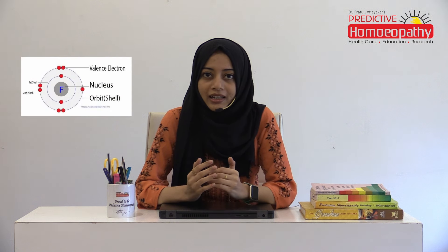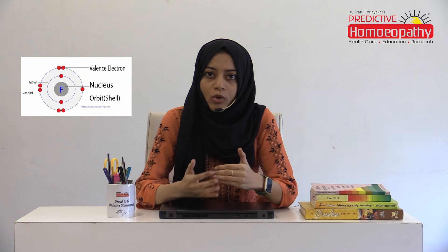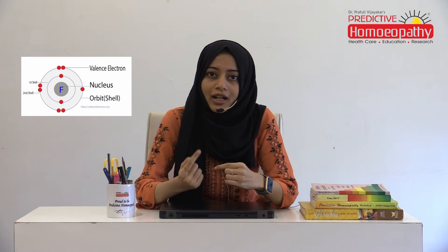Now, what is Fluoric Acid? It is derived from the Fluorine element. When we talk about Fluorine element, we know it is a Halogen and its valence is 7. So it needs just one more atom to form a bond. How do we correlate it to the drug part?